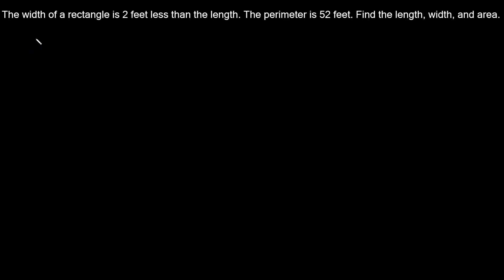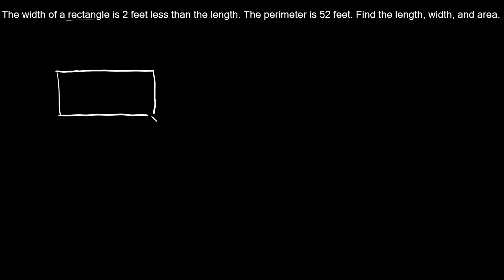This next problem says the width of a rectangle is 2 feet less than the length. It also says the perimeter is 52 feet. Find the length, width, and area. First thing I always like to do is draw a picture — we're talking about a rectangle, so let's draw a rectangle. We know the perimeter is equal to 52 feet.